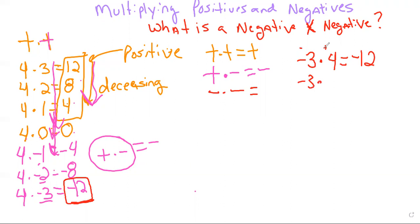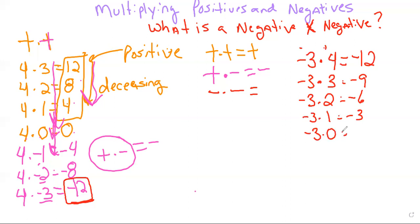Continuing the pattern: negative three times two is negative six, negative three times one is negative three, and negative three times zero is zero. Notice what has happened as we've gone in this direction — we are no longer decreasing, we're actually increasing. We are increasing and approaching zero, so we are getting ready to jump over zero.